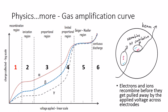Gas amplification curve is a plot that shows how an obtained signal changes with different voltage applied across the collecting electrodes. The figure on the left shows this general shape.